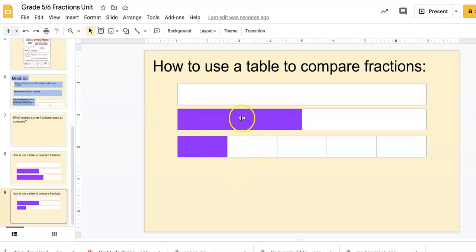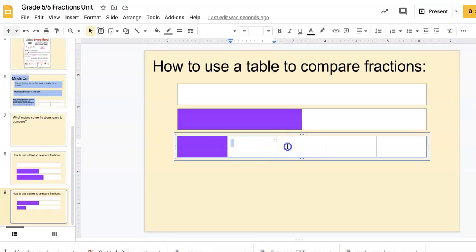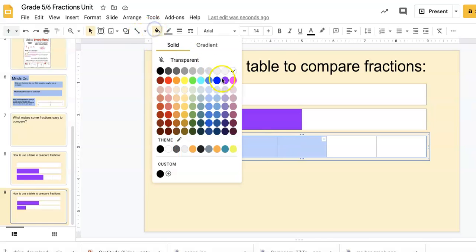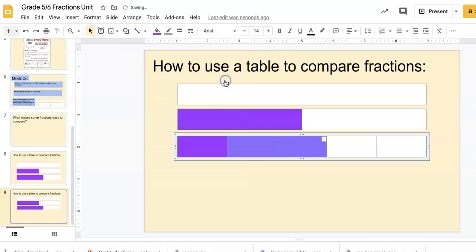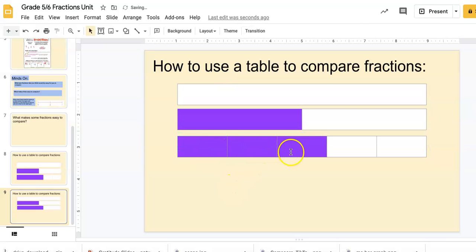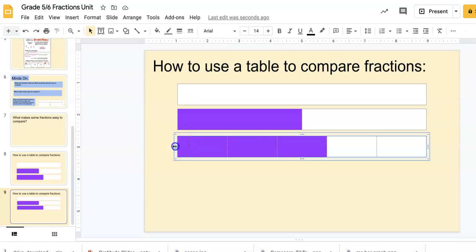You can see the comparison between fifths and halves or whatever else you want to do. Say I wanted to find out if three-fifths was smaller or larger than one half—I can color in three-fifths using the fill bucket and easily see that three-fifths is larger than one half.